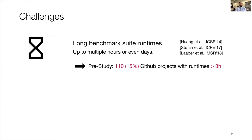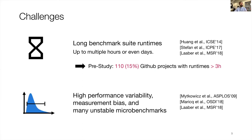The other challenge related to microbenchmarking and performance measurements in general is high performance variability. This can depend on the execution environment in which we run the measurements, or it can be due to other forms of measurement bias as reported by previous work. We also reported in a previous paper that in microbenchmark suites there are many unstable benchmarks and different levels of stability.